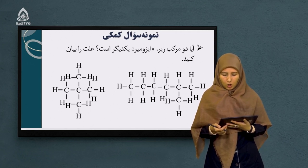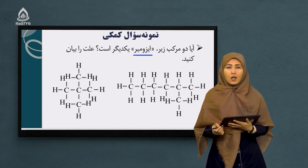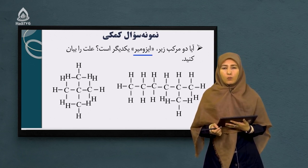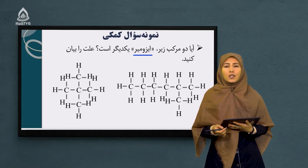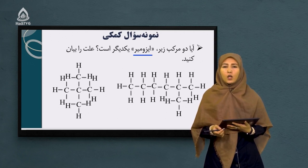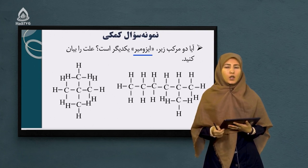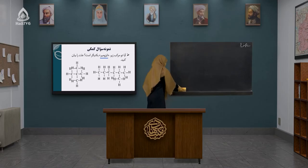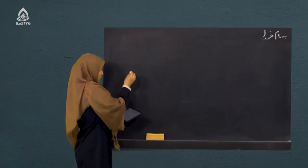سوال: آیا دو مرکب زیر ایزومیر یکدیگر می‌باشند؟ علت را بیان کنید. برای شما دو ساختار داده شده، شاگردهای عزیز نازنین. این ساختارها را با کمک هم بر روی تخته سیاه می‌نویسیم و با هم کار می‌کنیم که آیا این دو مرکب ایزومیر یکدیگر به حساب می‌آیند یا نه.